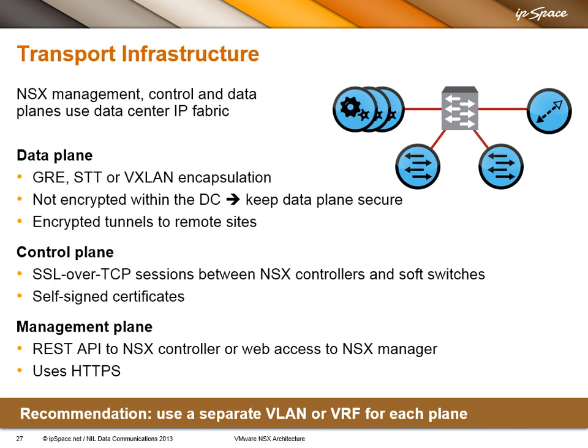The reason the controller requires a minimum of 3 nodes is that the nodes use Paxos, which is a voting protocol, and you need an odd number of members to have an unambiguous vote. That's why the minimum number of nodes in the cluster is 3.